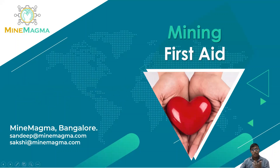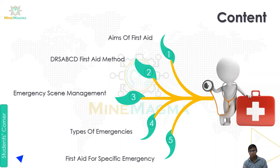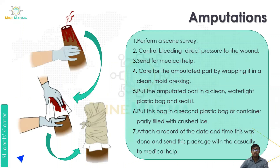This topic we have already started and divided into 5 parts. In the first part we covered the aims of first aid, DRS, ABCD, first aid method, and emergency scene management. Now we are going to continue with types of emergencies and first aid for specific emergencies.